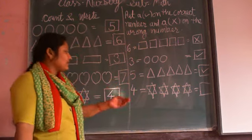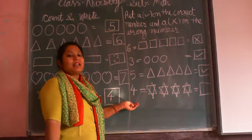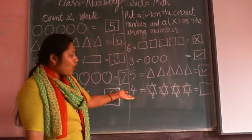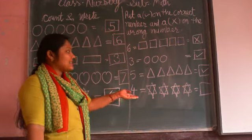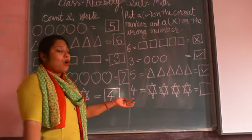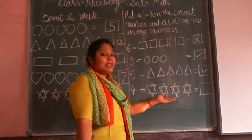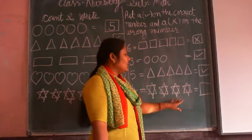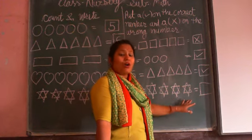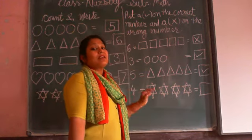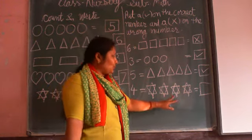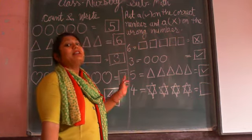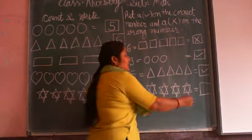Next. Which number is this? This is number 4. And how many stars are here? 1, 2, 3, 4. Yes, 4 stars. So this is right or wrong? Right. Very good.